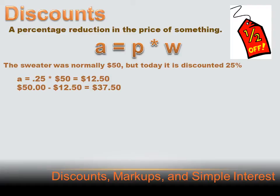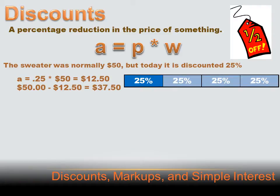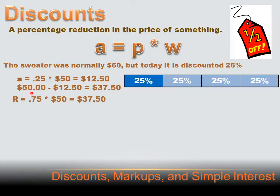After the 25% discount, that $50 sweater would cost you $37.50. There's another and maybe faster way to do this. If you're getting a 25% discount, they're taking 25% off of the 100% original price. If you take 25% off of 100, it leaves 75%. So you're going to end up paying 75%. We could say R, the new retail price, equals 0.75 times the original price of $50, and that equals $37.50.